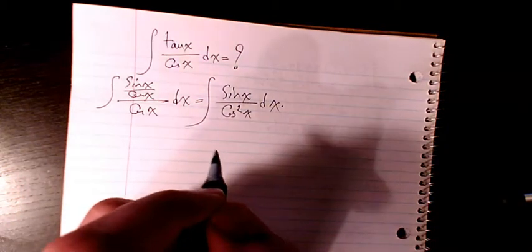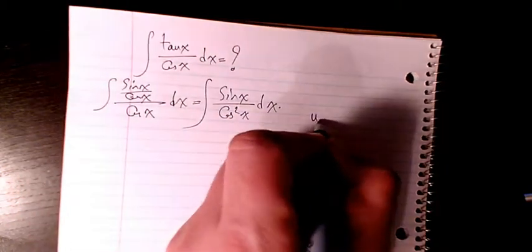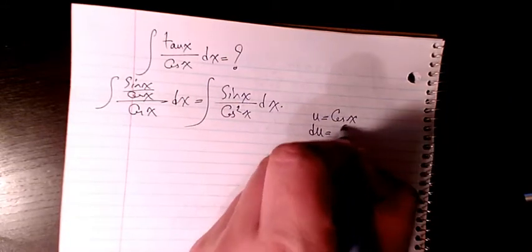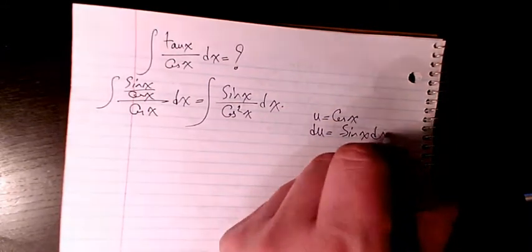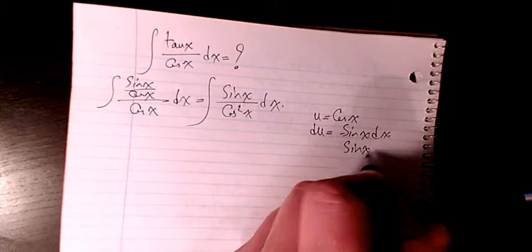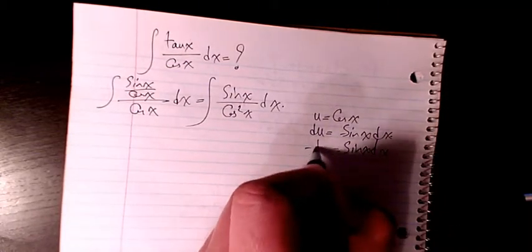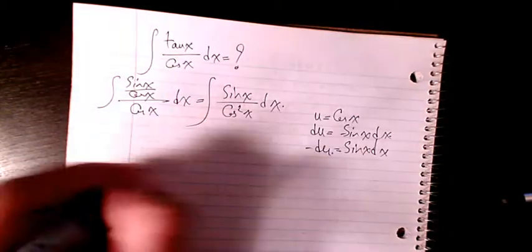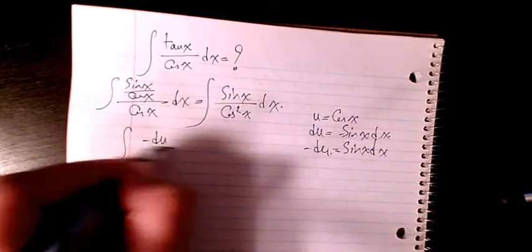Then I will use substitution: u equals cosine x, du will be negative sin x dx. So sin x dx is negative du. So it will be negative du over u squared.